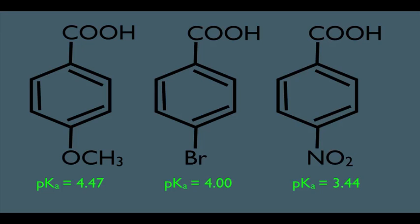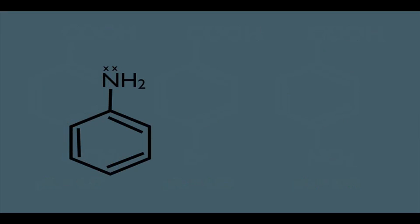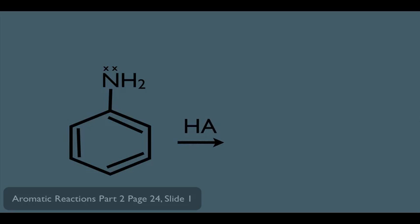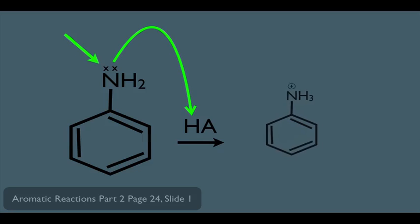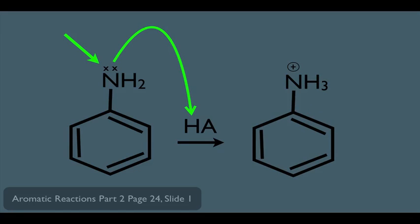Now, up to this point we've been talking about acidity, but what about basicity? Let's remind ourselves what it means to be basic. If we take this molecule and add an acid such as HA, the acid is going to donate a proton to these electrons, and we end up with NH3+. It takes that lone pair of electrons on the nitrogen to be donated to the H+ in order to act as a base. So how basic you are simply depends on how available those lone pair electrons are going to be.